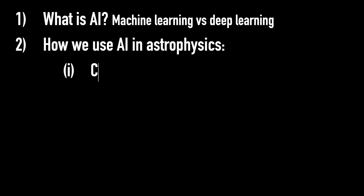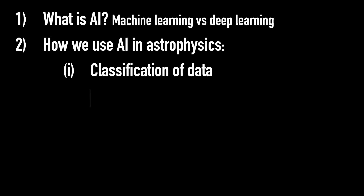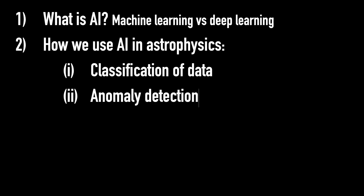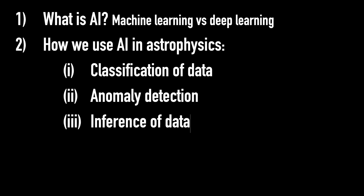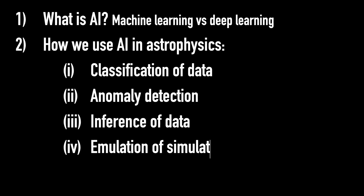Then we're going to chat about four different ways that us astrophysicists use AI tools: the first being classification of data, the second being finding weird things — aka anomaly detection — the third being inference of data, and the fourth, emulation of simulations.